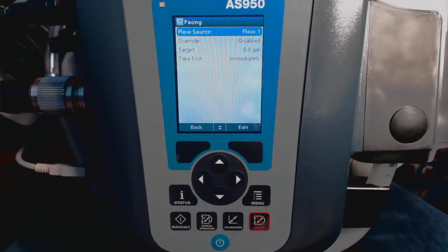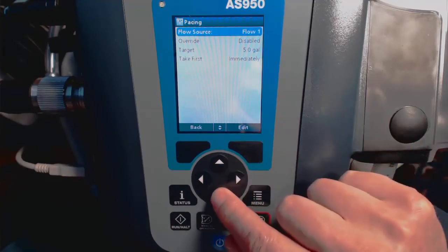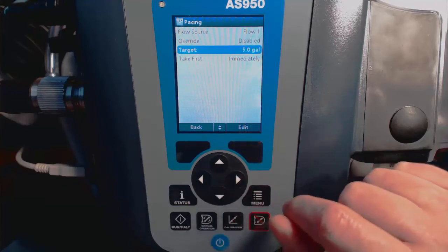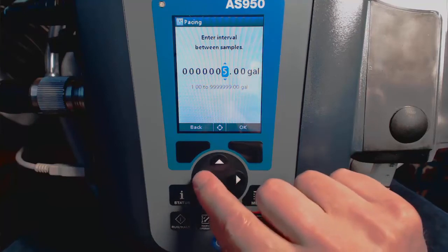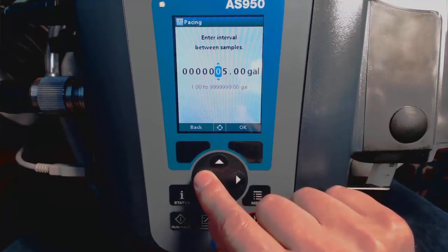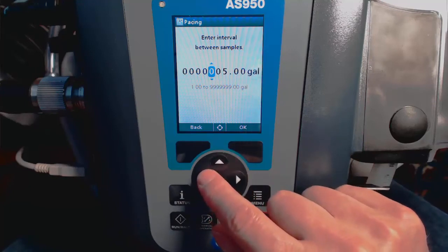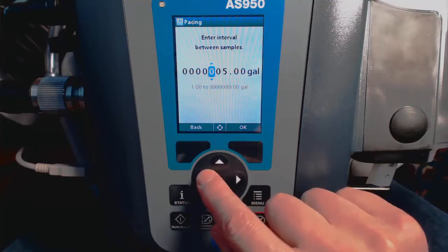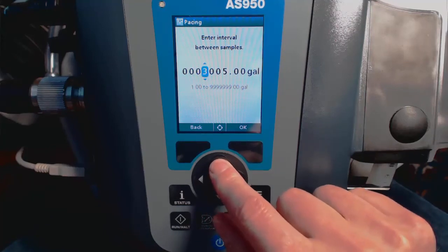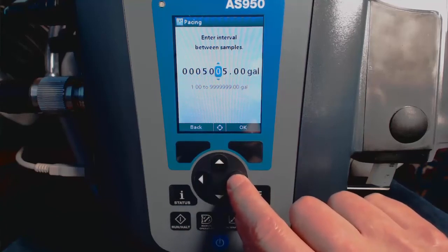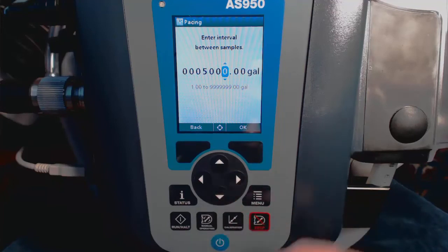Now we'll need to select our target volume. In other words, how many gallons will pass before we collect a sample. So scroll down to Target, and enter the number of gallons we want to use as our target volume. In this case, I will use 5,000 gallons. Again, what this means is that every 5,000 gallons that is measured by the AV9000 submerged pressure velocity sensor, a sample will be collected.